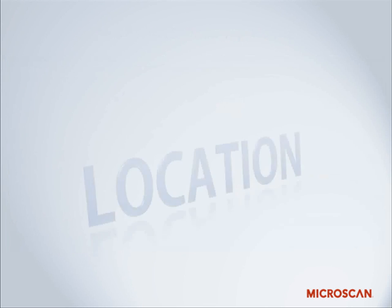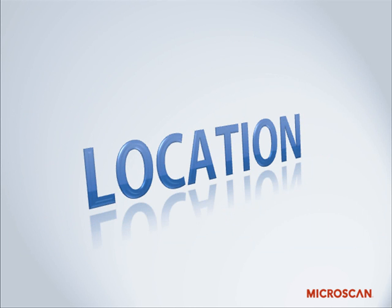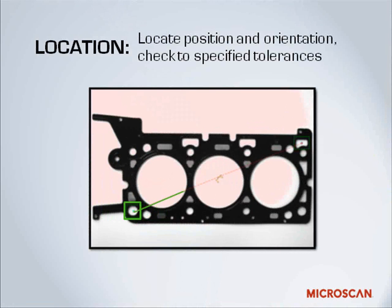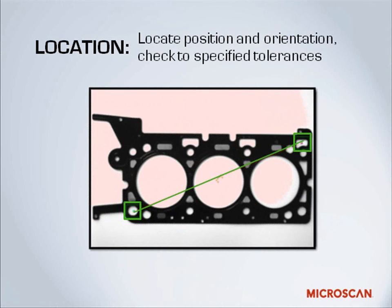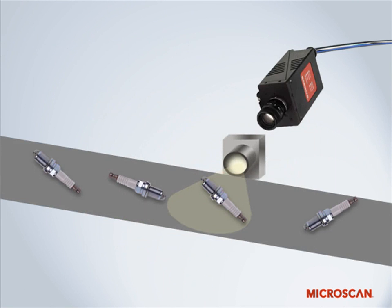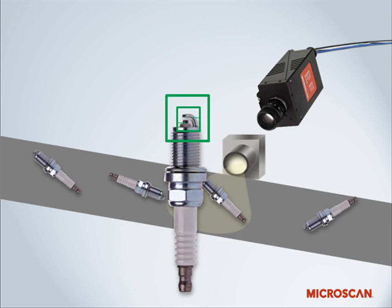Location is when machine vision is used to report the position and orientation of a part. We can locate the position and orientation and then check that to a specified tolerance — looking at the part to make sure it's at the correct angle and using that as a reference point to verify proper assembly. You can also use this for alignment to other machine vision tools. Taking our spark plug example: your parts may be facing all different directions as they go down your production line, and you can locate a part, straighten the image, and then run other machine vision processing tools on it.